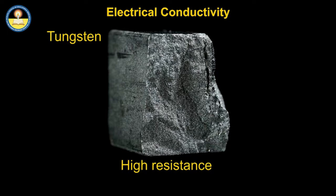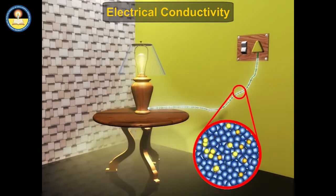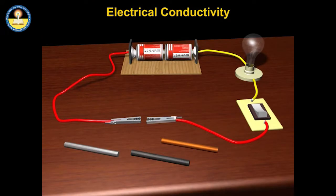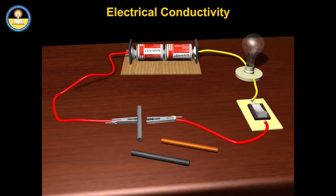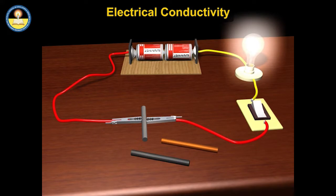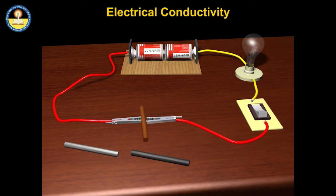As tungsten has high resistance and a high melting point, it is generally used for making filament of incandescent lamps. To understand electrical conductivity, set up an electrical circuit consisting of a battery, bulb, switch, and clips. Place a metal strip between clips A and B and switch on the circuit. When strips of different metals like aluminium, iron, or copper are put between the terminal clips, the bulb glows on completing the circuit, confirming these metals are good conductors of electricity.